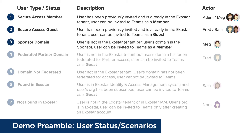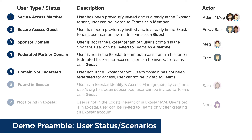We've got sponsor domain users — these are users not in the ExoStar tenant but whose user domain is the sponsor. These users can be invited to teams as members, and this will be Meg initially. We've got federated partner domain — this is a user who is not in the ExoStar tenant but the user's domain has been federated for partner access. These users can be invited to teams as guests, and this will be Fred initially. Then we've got domain not federated — this is a user not in the ExoStar tenant whose domain has not been federated for access, so they will not have access. A future feature of the app will allow the admin to configure these domains.